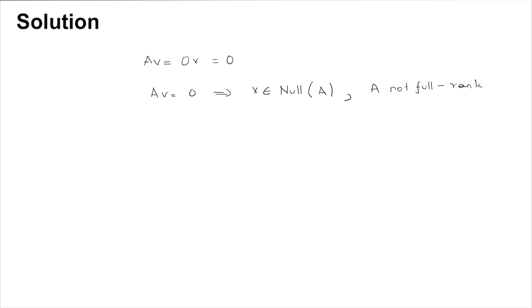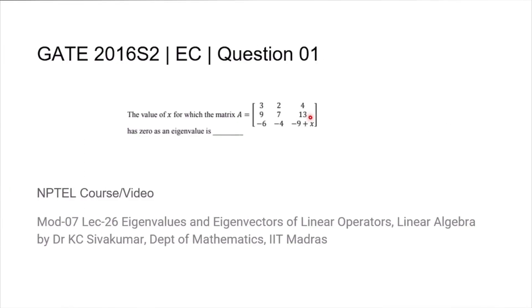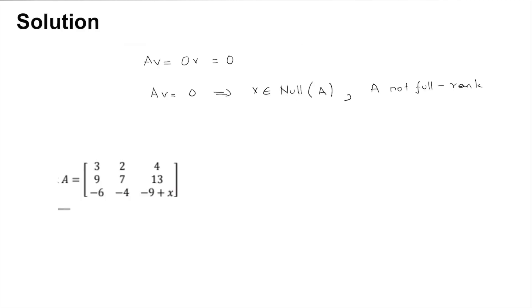So all we need to do is figure out a value of x such that this matrix A is not full rank. What does it mean to say that the matrix A is not full rank? Well, it means that these three column vectors are linearly dependent.